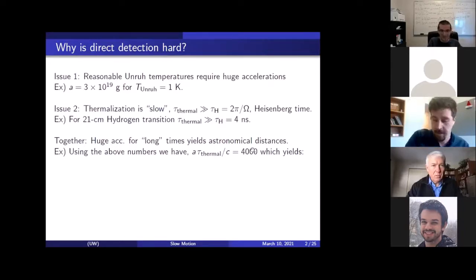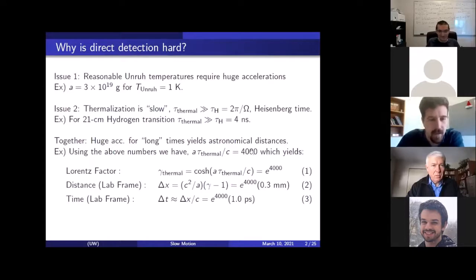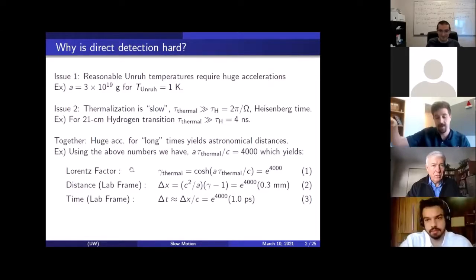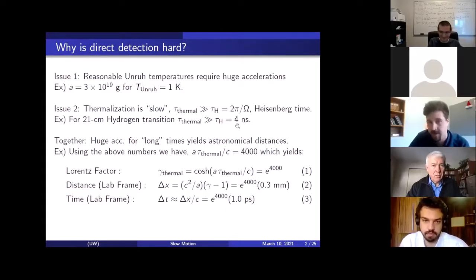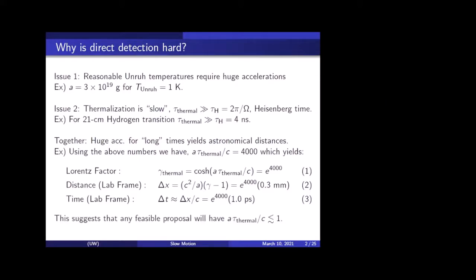So what do these two issues imply together? That if we take huge accelerations for these long times, then we get out astronomical distances. If I use the numbers above, this acceleration and this time here, you put them together and you get A tau thermal over C is 4,000. Actually, it has to be much larger than 4,000 here. I've just used the Heisenberg time. But anyway, so you get 4,000. 4,000 isn't a large number, but let's look at how it enters the equations.